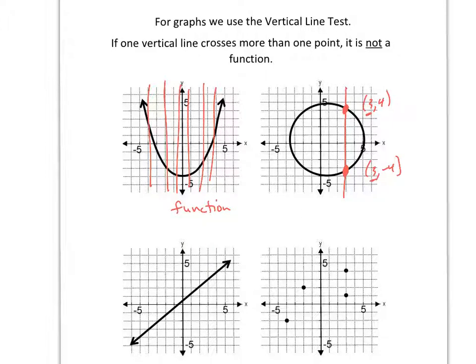Over here, all I need is one line to show me that this is not a function. Let's look at the two at the bottom. I can draw lots of vertical lines here, I'm never going to cross my graph more than once. So this one is a function.